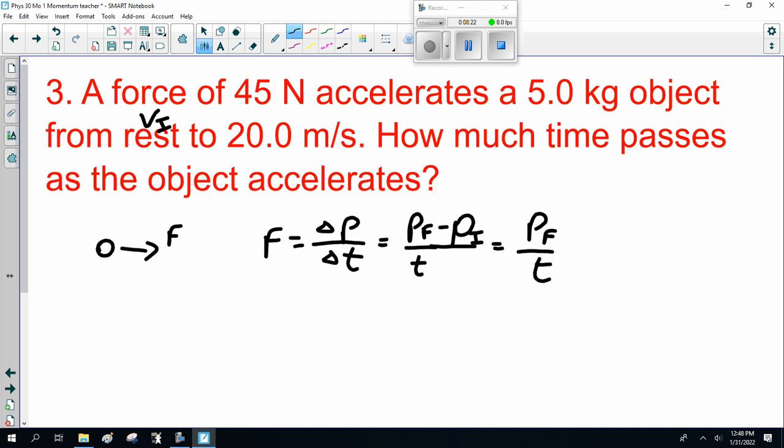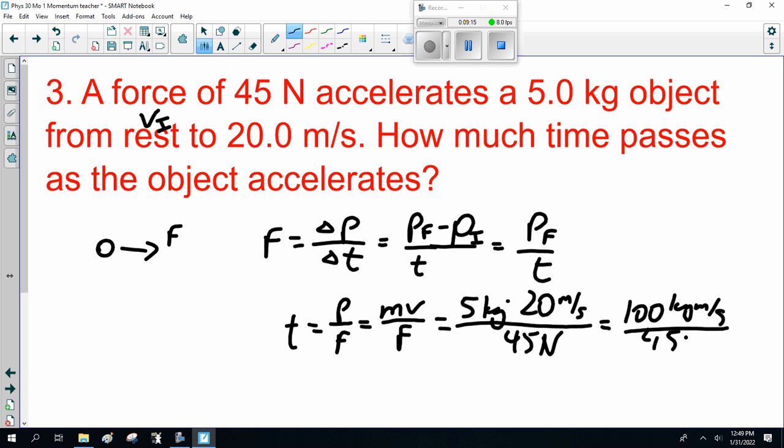We have to solve for the time. I can do the initial v final acceleration displacement time, but momentum is a beautiful sneaky shortcut. Because momentum is force times time. Solving for time, time would be momentum divided by force. Momentum is mass times velocity over force. So that is 5 kilograms times 20 meters per second. The force is 45 newtons. Momentum is force times time, so I can solve for time. This is 100 kilogram meters per second divided by 45 newtons. So the time is 2.22 seconds.